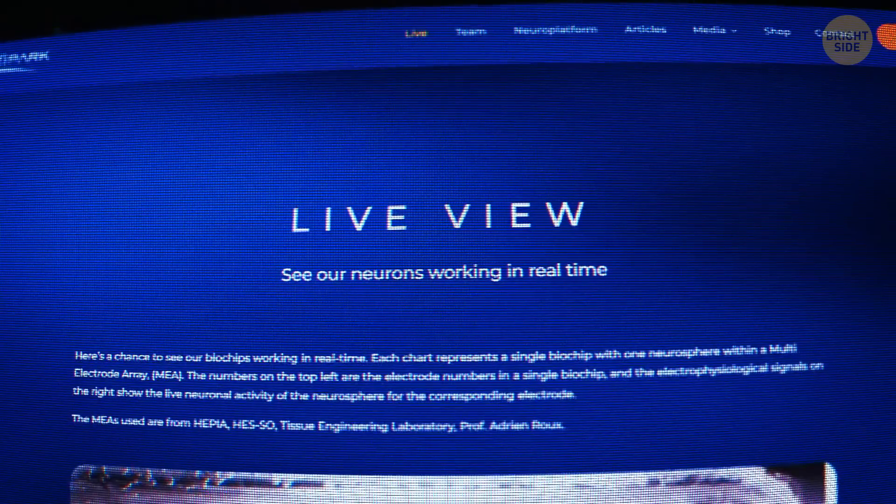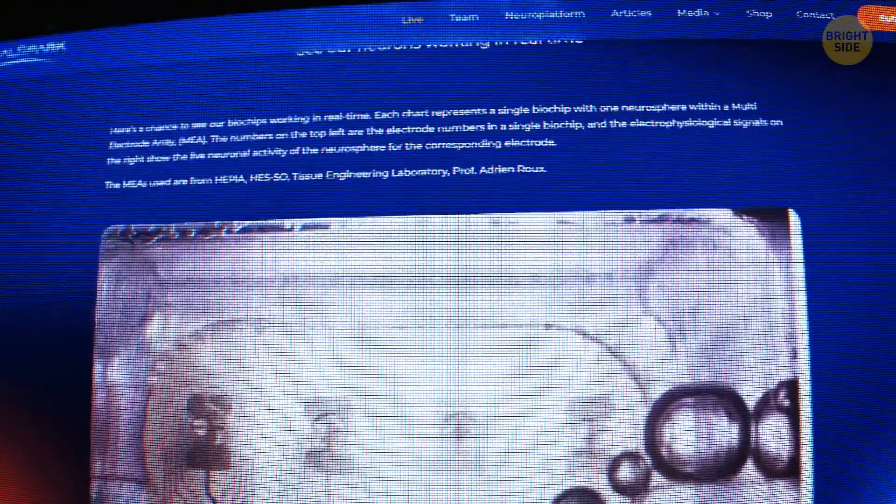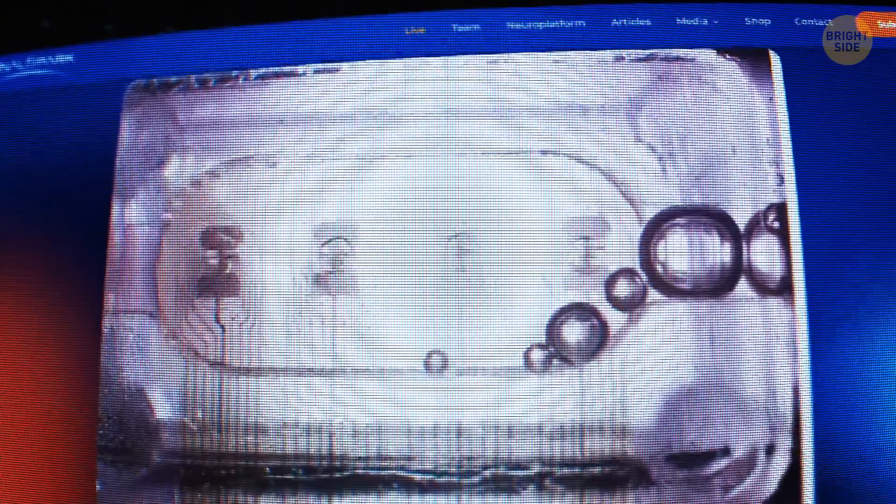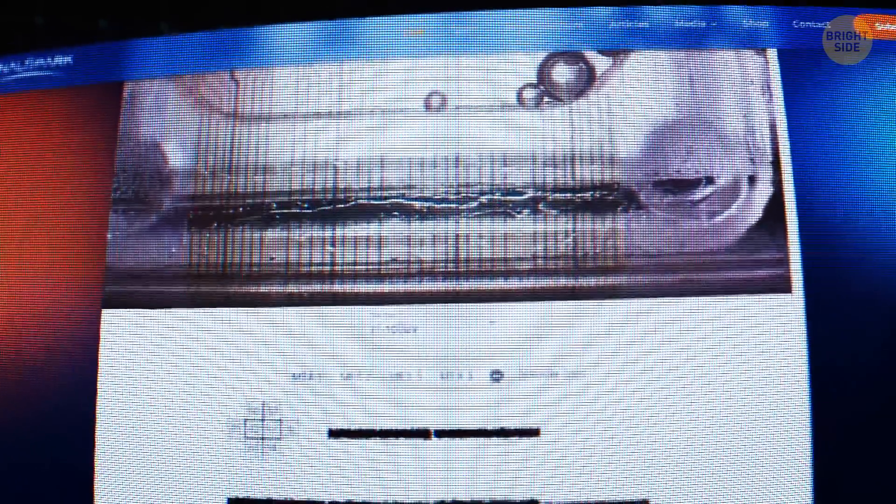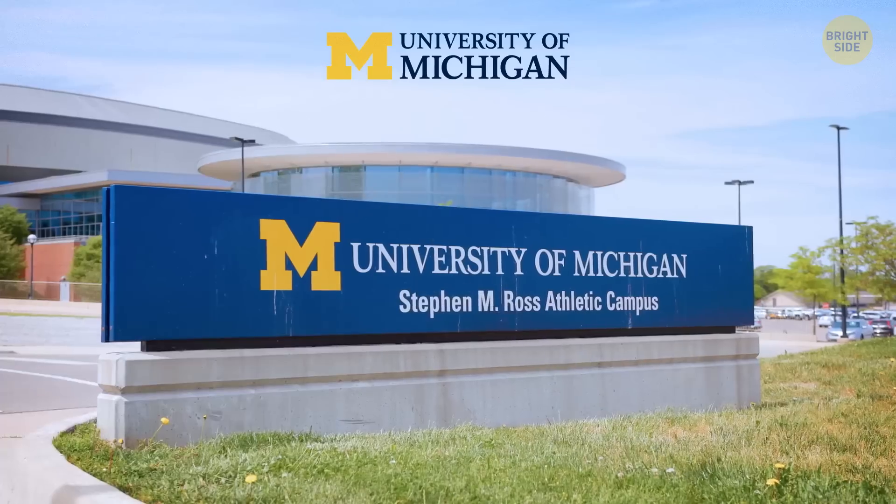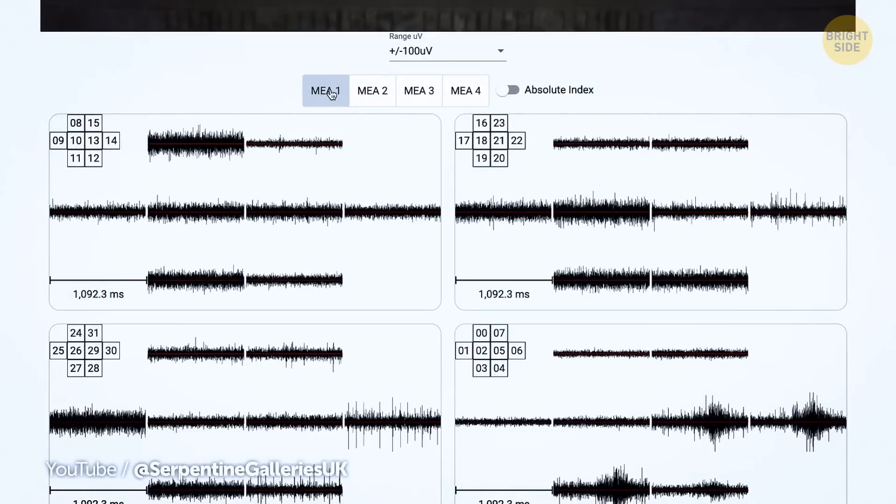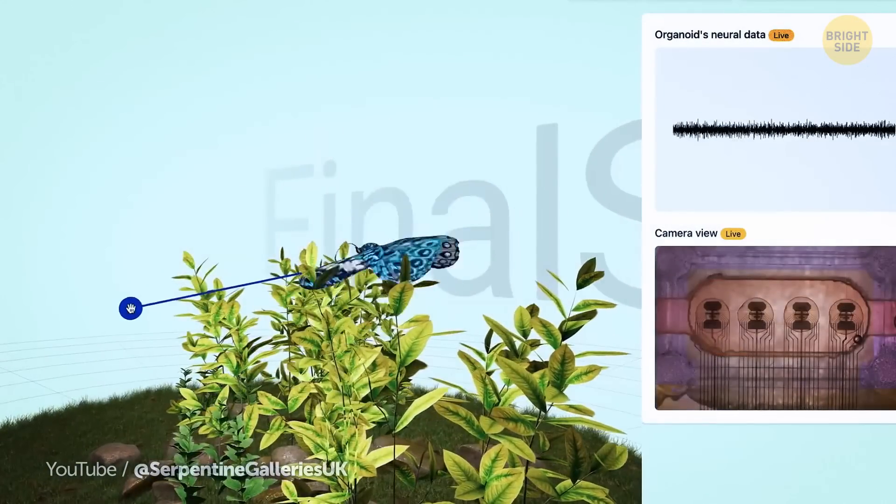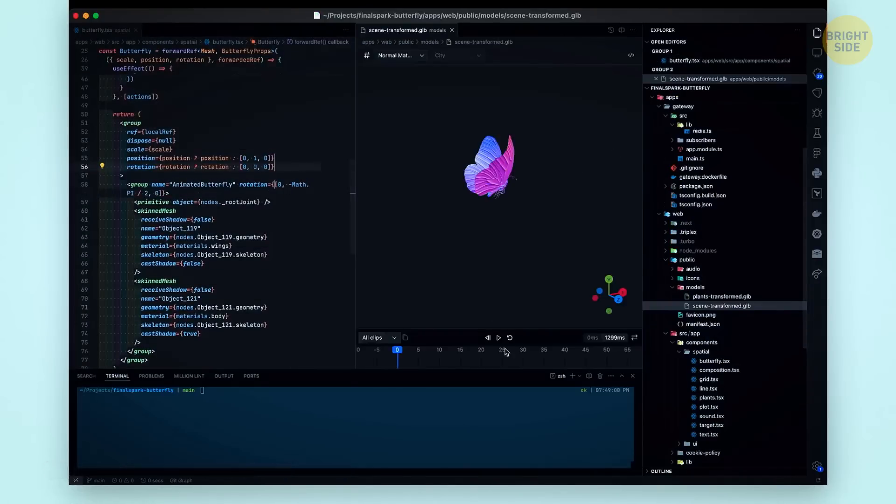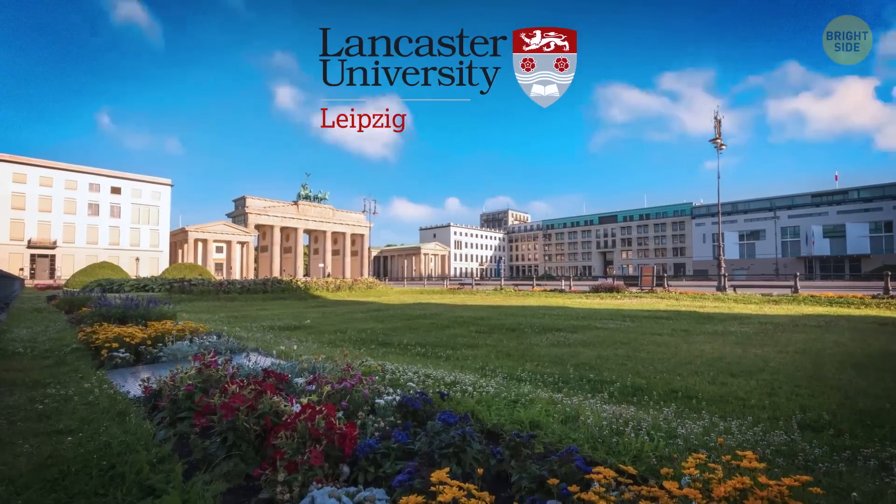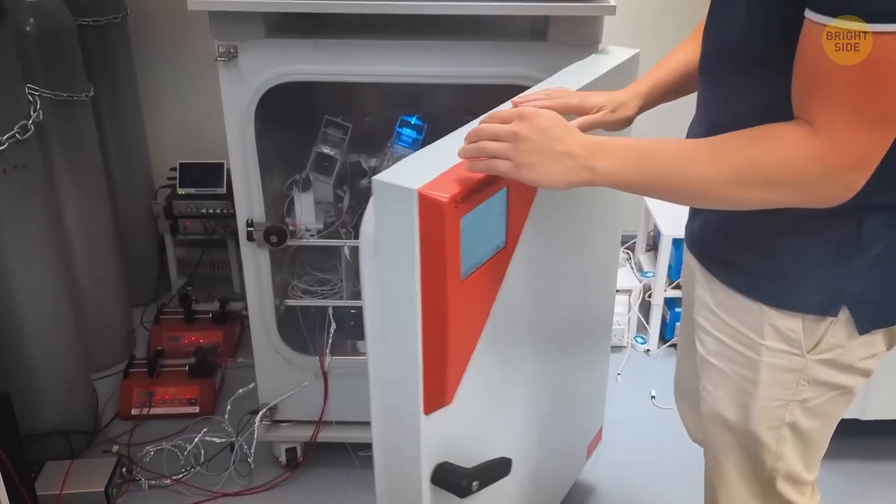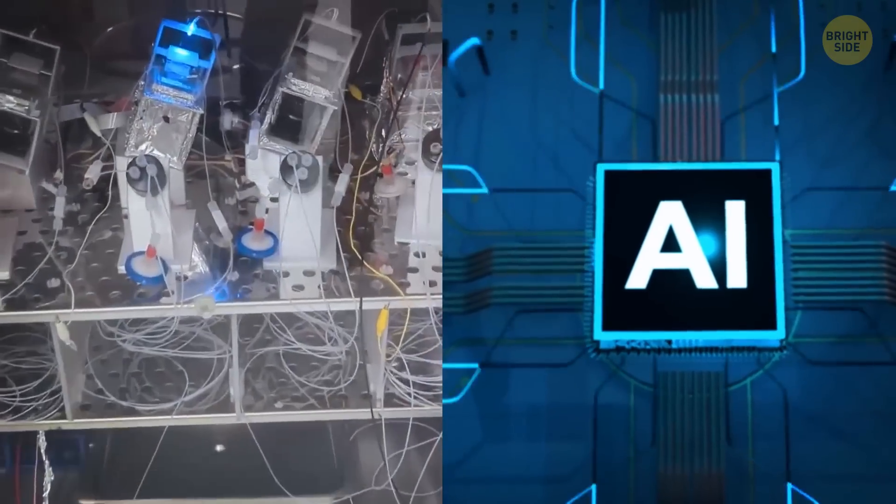The big task for researchers is to figure out how to make the neurons in these organoids do what we want them to do. Scientists from 34 universities have asked to use FinalSpark's biocomputers, and the company has already allowed scientists from nine schools to start working with them. For example, the team at the University of Michigan is exploring how to use electrical and chemical signals to control the organoids. Scientists at Lancaster University in Leipzig, Germany, are trying to figure out how to make the organoids work with different types of AI learning models.